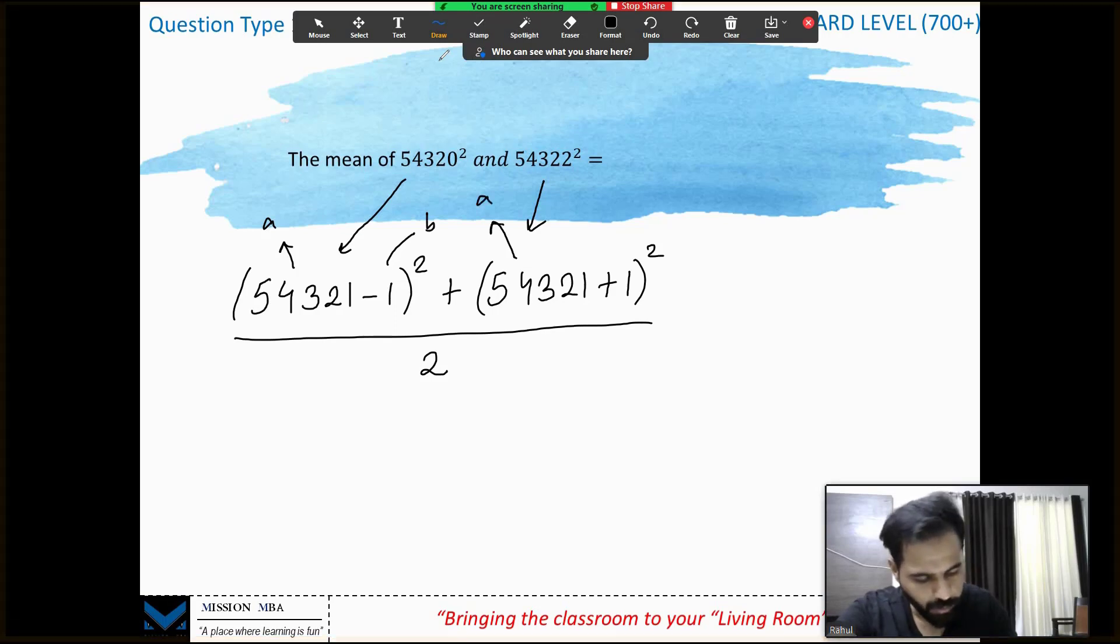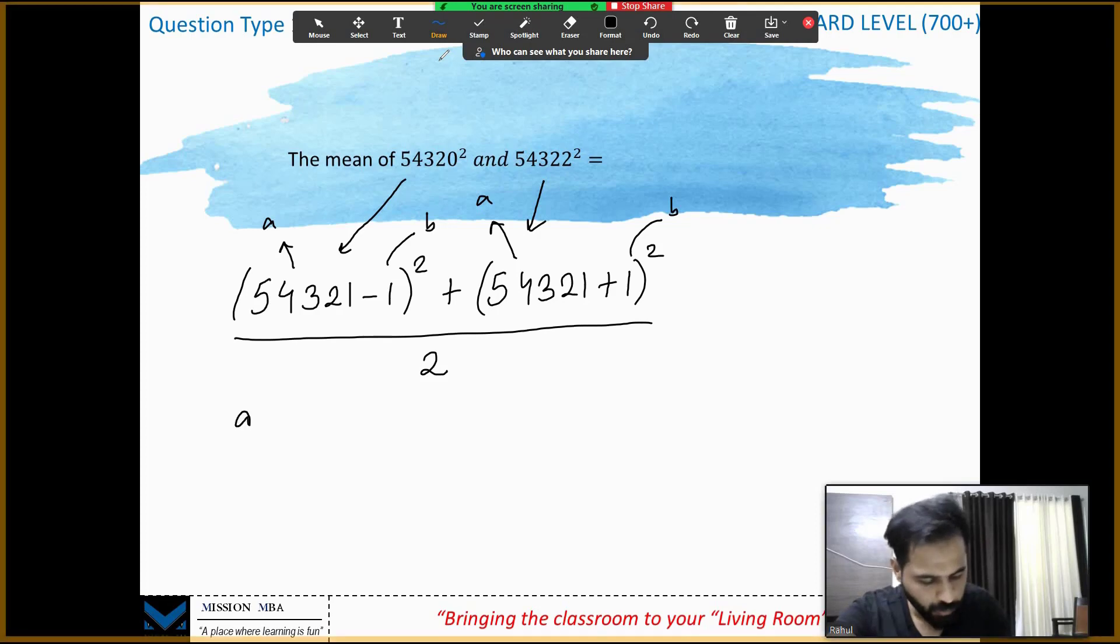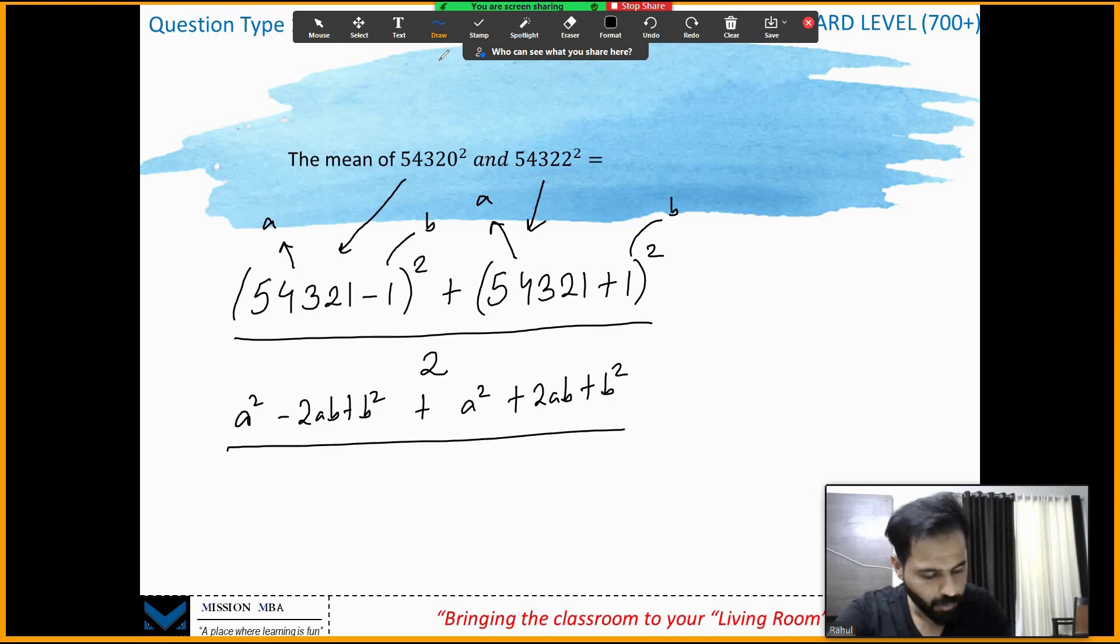So here also it is a and it is b. What's (a - b)²? a² - 2ab + b². Plus (a + b)²? a² + 2ab + b². Upon 2. Cancels, cancels. 2a² plus 2b² upon 2.